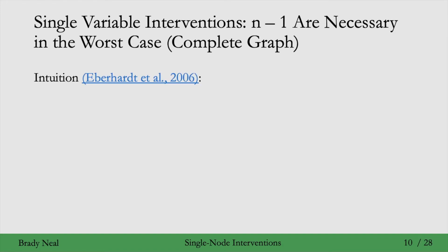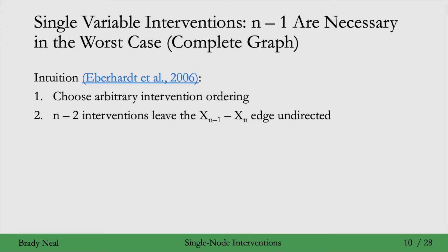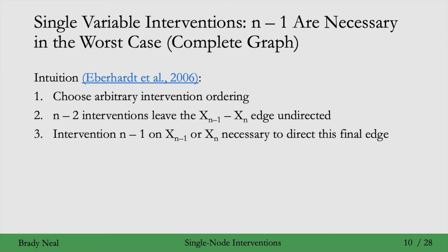It turns out that n minus 1 interventions are also necessary in the worst case, specifically when we have a complete graph. We choose an arbitrary intervention ordering x1, x2, up to the n minus 1 interventions. If we only do n minus 2 interventions, that leaves the last two nodes and the edge between them undirected. In the worst case with a complete graph, there is an edge between them, and there are no immoralities to help direct it, so an intervention is required.